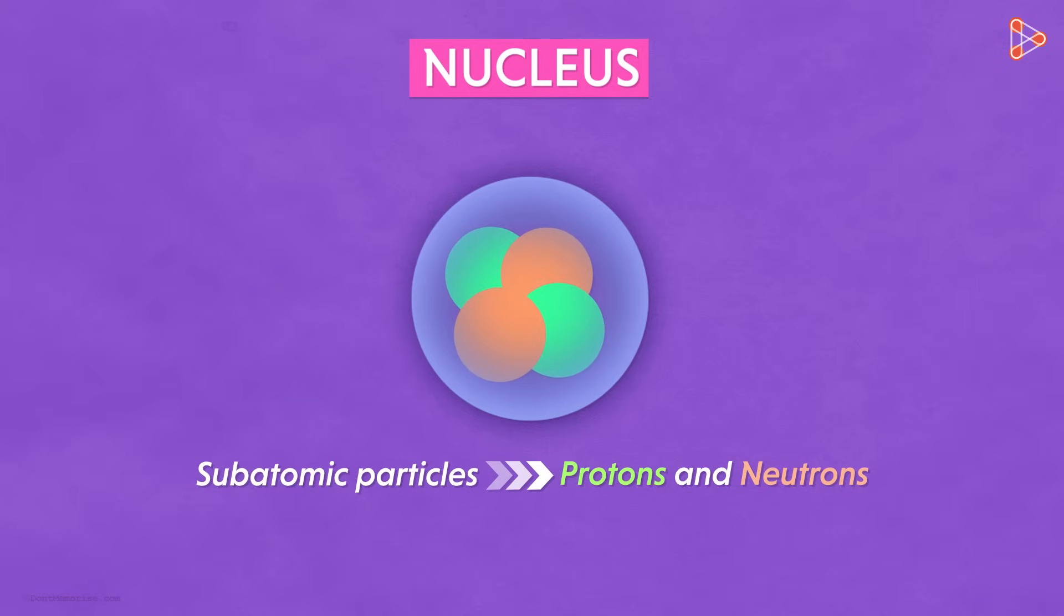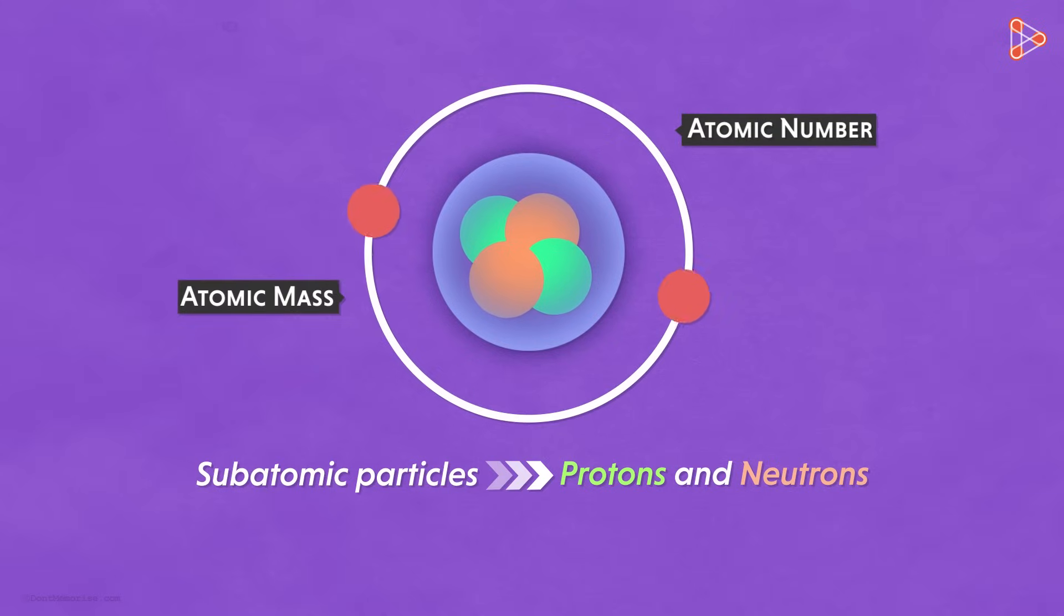Yes, the presence and the number of protons and neutrons in the nucleus of any atom define many important characters, like the atomic number, atomic mass, isotopic forms and so on.